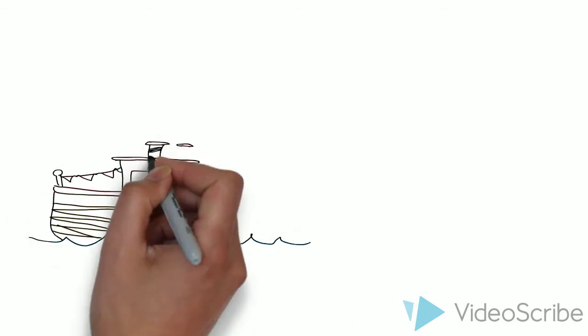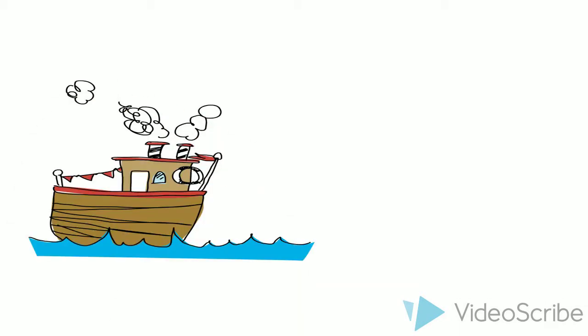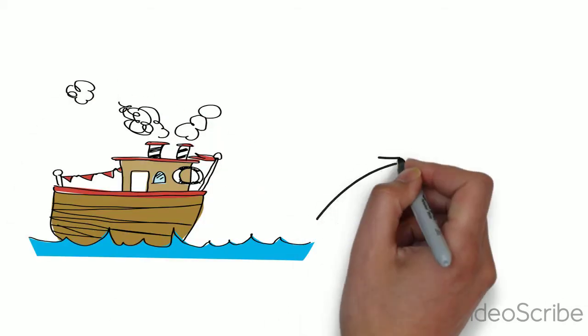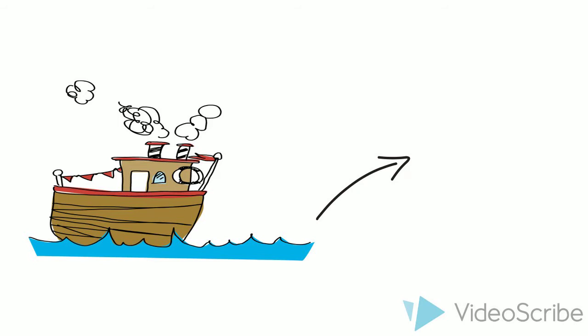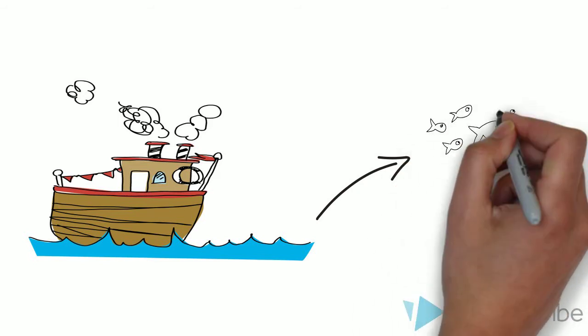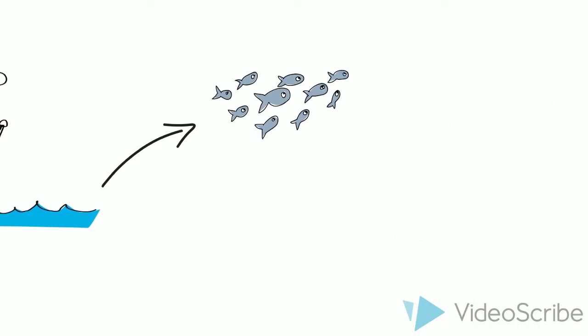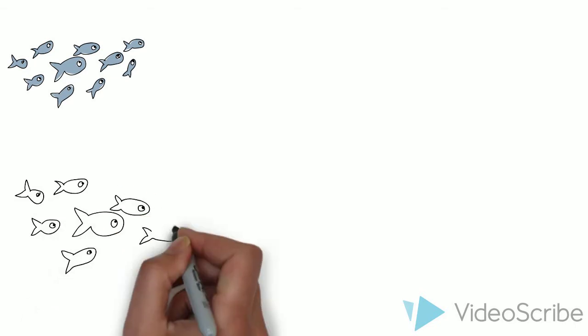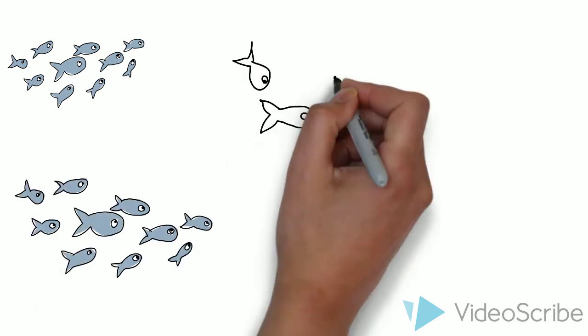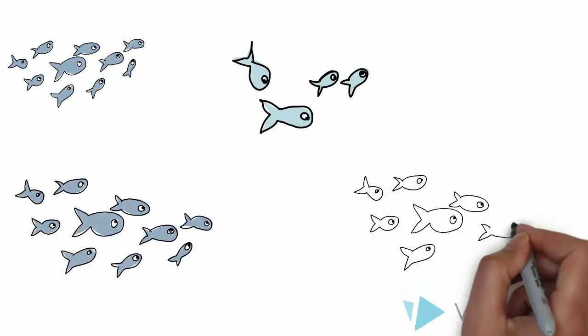In less than a decade, the Round Gobi successfully spread through all five Great Lakes and has begun to invade other waters. In some areas, the fish has reached densities of more than 100 fish per square meter. Since the fish has no natural predators, it just keeps growing in population.